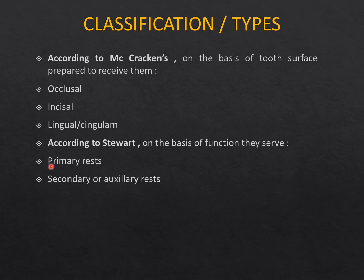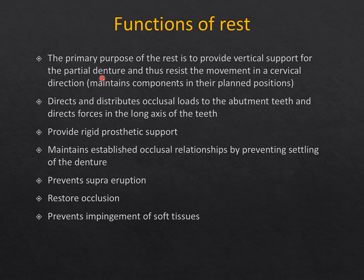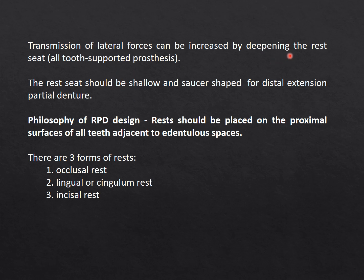The primary purpose of a rest is to provide vertical support, preventing the denture from settling under occlusal forces. Rests also direct and distribute occlusal forces along the long axis of abutment teeth to protect them long-term, provide rigidity, maintain the established occlusal relationship by preventing denture settling (unlike complete dentures), prevent supra-eruption of abutment and antagonist teeth, restore occlusion, and prevent soft tissue impingement. Transmission of lateral forces can be managed by the depth of rest seats. For distal extension partial dentures, rest seats should be shallow and saucer/spoon-shaped — they should not lock the rest in, as this creates torquing forces on abutment teeth leading to bone loss and trauma from occlusion.